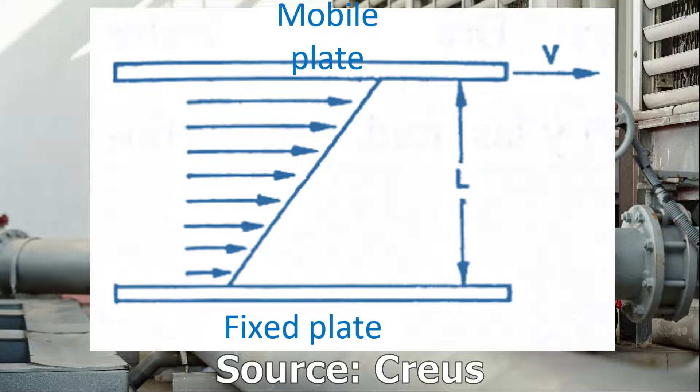The viscosity of a fluid according to Newton is the resistance offered by the fluid to movement between two parallel plates separated by a unit distance — one of them fixed and the other mobile — that moves with the unit of speed.